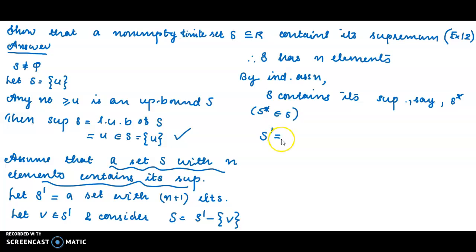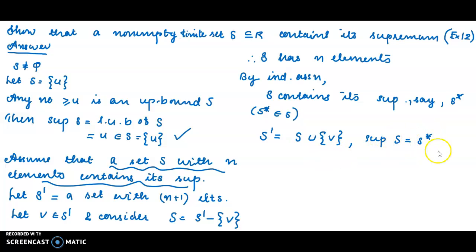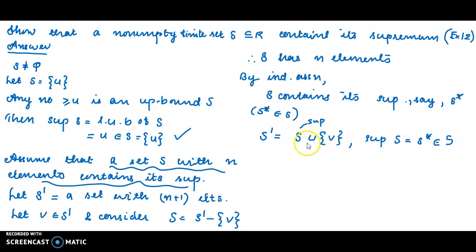Now we obtain S dash. This is the supremum of a set with n elements, which is an element of S itself — S star is the supremum. Now, referring to the earlier problem we have done: if we have a set which contains its supremum and we add another element to the set, then the supremum of the new set S dash equals the supremum of S.